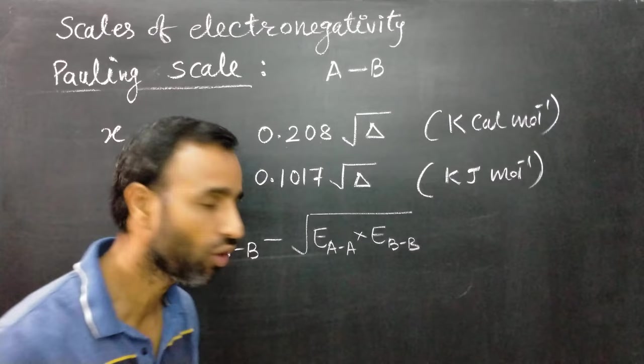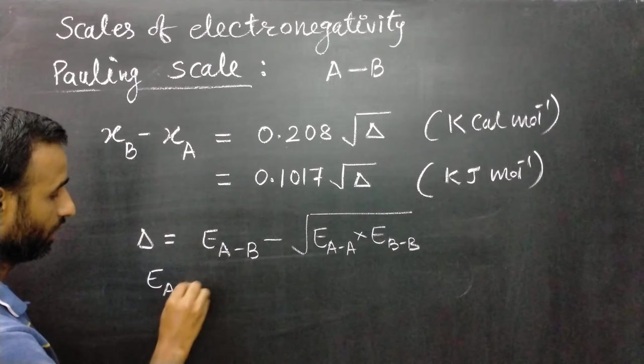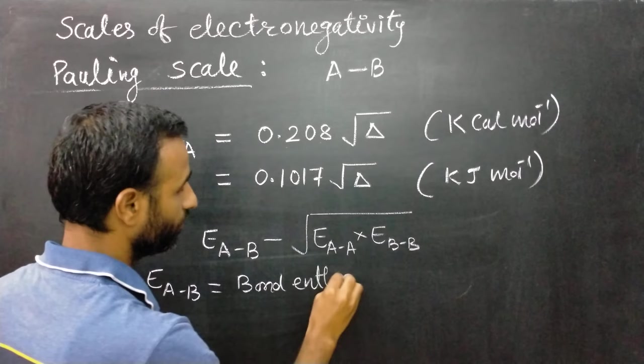E_AB is the bond enthalpy of the A–B bond.